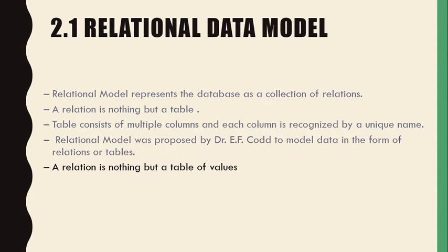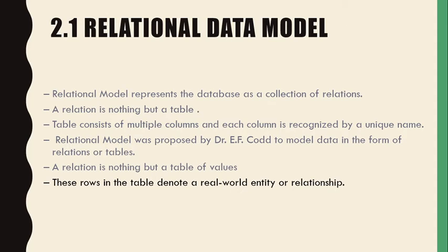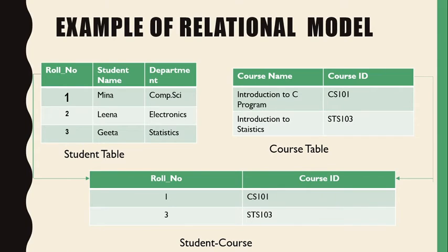A relation is nothing but a table of values. These values are represented in rows, and each row in the table denotes a real-world entity or relationship. For example, in a relational model we have a student table and a course table showing which students have registered for which courses. This relationship is represented in a student-course table. For instance, roll number one whose name is Mina, from the computer science department, has selected the course 'Introduction to C Programming' with course ID CS101.